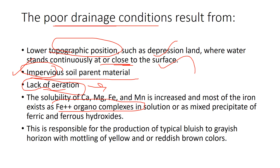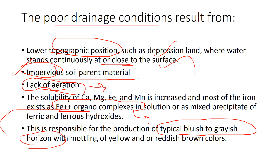Iron salts such as Fe²⁺ organo-complexes are usually bluish to greenish in color — as may be recalled from school chemistry practicals. When this bluish-greenish mixture combines with soil, it imparts that color. This is responsible for the production of the typical bluish to grayish horizon due to the presence of iron organo-complexes, along with mottling of yellow and reddish-brown colors from iron oxidation forming rust-like compounds.